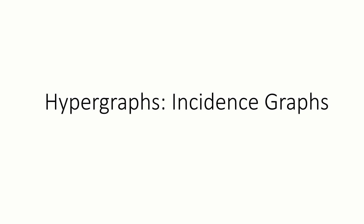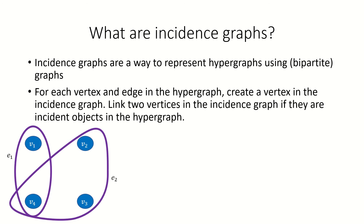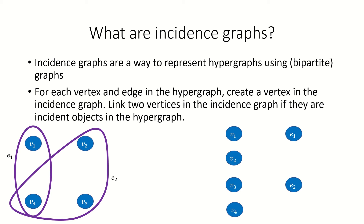Today we're going to look at ordinary graphs that we can build from a hypergraph, specifically incidence graphs. To form the incidence graph of a hypergraph h, create a vertex corresponding to each vertex in h, and create a vertex corresponding to each edge in h. Then link two vertices only if they correspond to incident objects in the hypergraph.